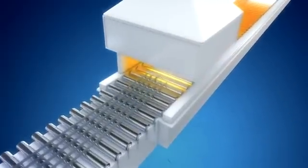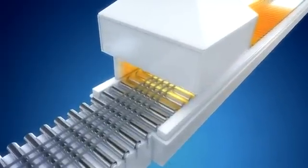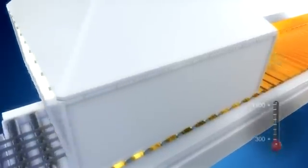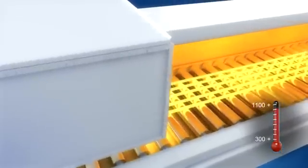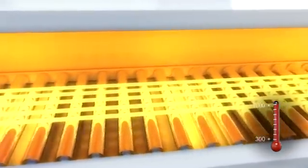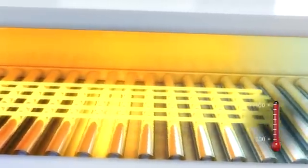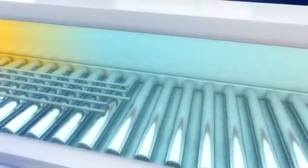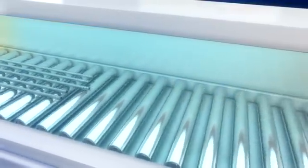To re-establish material structure and hardness, the tubes are then heat treated in an annealing process. They are heated to over 1000 degrees centigrade in a protective atmosphere to avoid oxidation and then rapidly cooled to about 300 degrees.